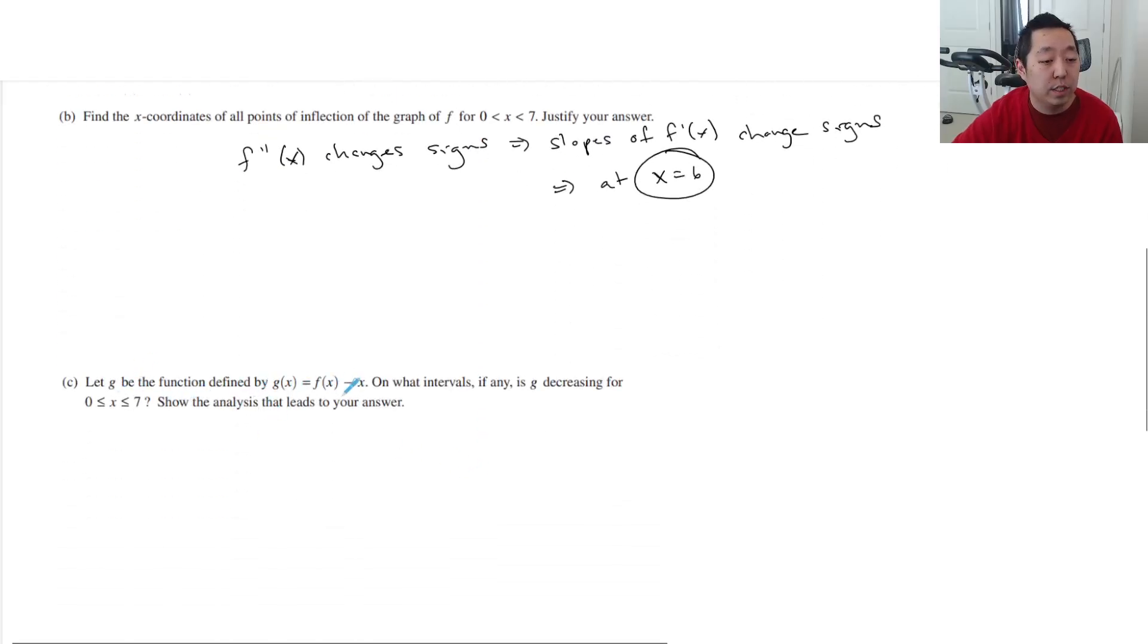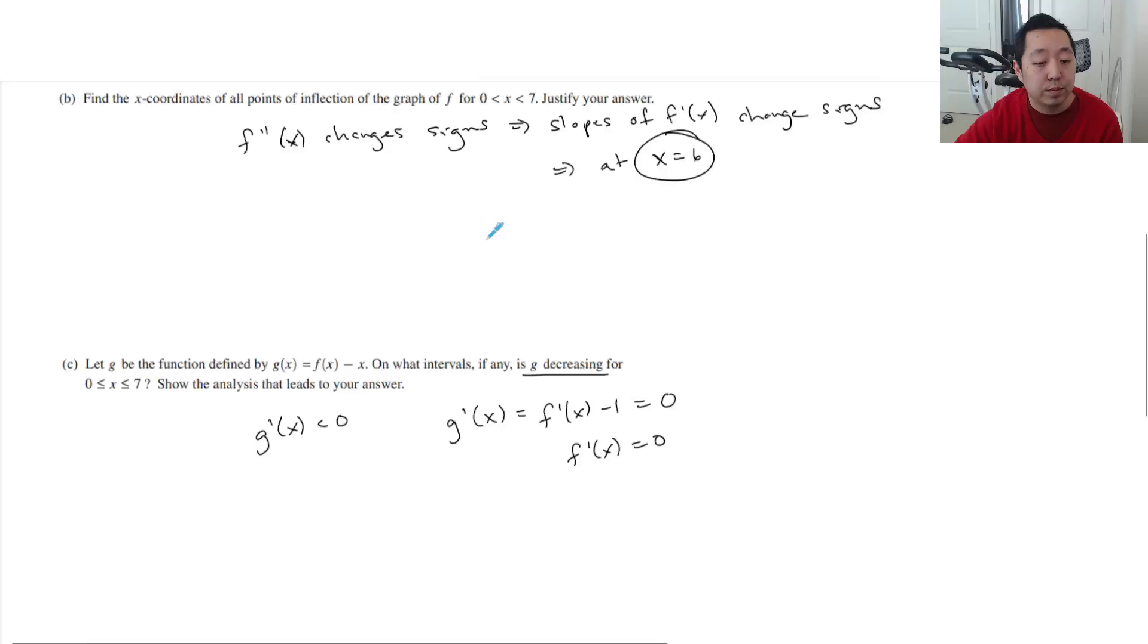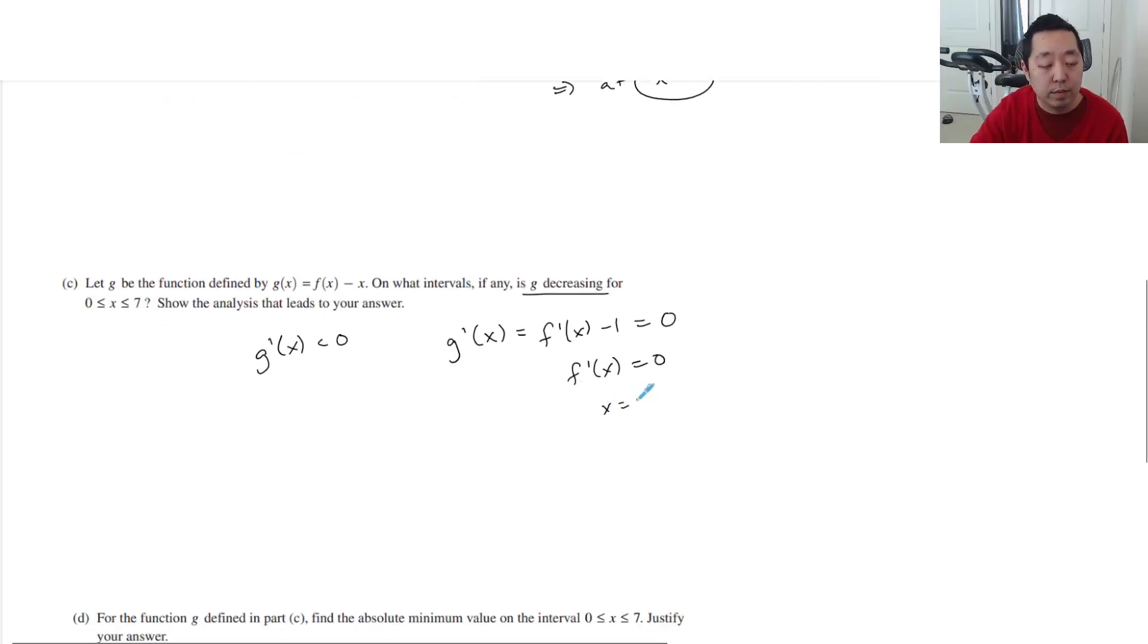Let g be the function defined by g of x equals f of x minus x. On what intervals is g decreasing? So I want to know where g prime of x is less than 0. And the way you do that is you make a number line. So g prime of x is equal to f prime of x minus 1. And I want to know when it's equal to 0. So when is f prime of x equal to 0? These would be the y values of f prime of x. So I look at the function and say, when is it equal to 0? It's 5 and at 7.